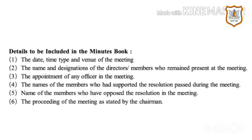Details to be included in the minutes book: First, the date, time, type, and venue of the meeting. Second, the names and designations of the directors or members who remained present at the meeting. Third, the appointment of any officer in the meeting. Fourth, the names of members who supported the resolution passed during the meeting. Fifth, the names of members who opposed the resolution in the meeting. Sixth, the proceedings of the meeting as stated by the chairman.